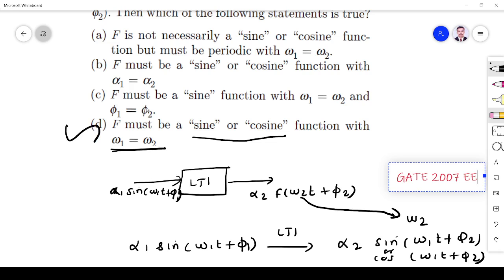So option B is the right answer. You can see ω₁ must be equal to ω₂ - that is true. It must be a sine function - it may be sine or cosine, so this is wrong. This sine or cosine is true, but α₁ equal to α₂ is not necessary, so this is wrong.